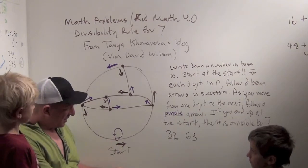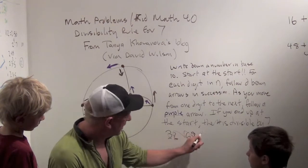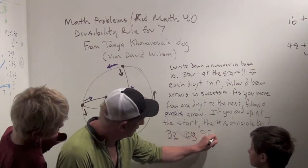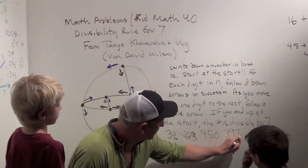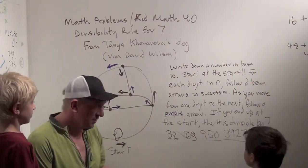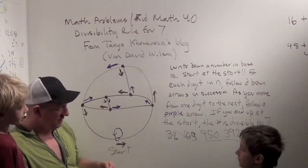Alright, so now let's use an example of two numbers that we don't know if they're divisible by seven or not. Nine hundred and fifty. Cool. And three, nine, two, seven. Now, do you know if those numbers are divisible by seven? No. Alright, so let's use our handy dandy chart. You want to do nine fifty?